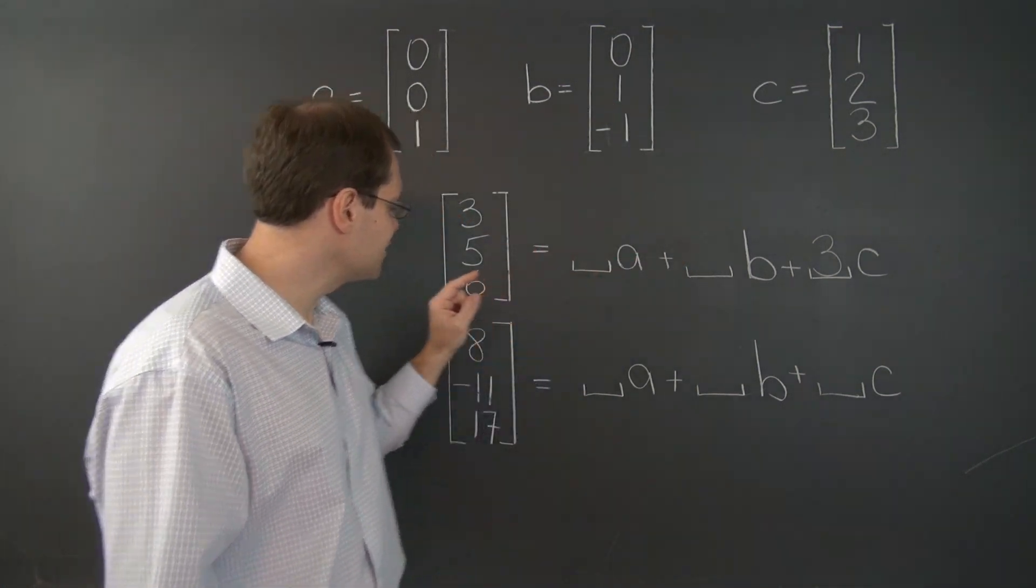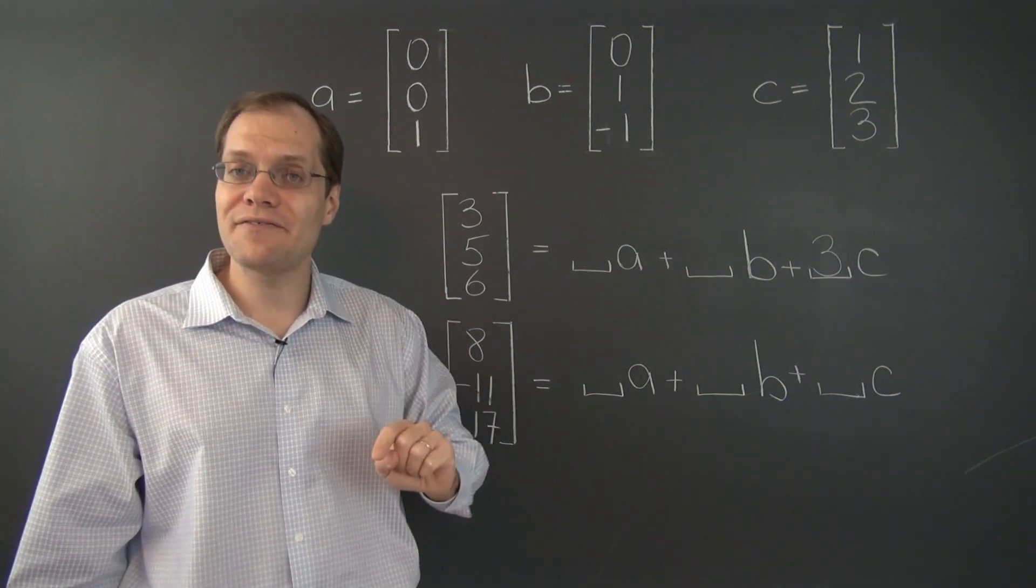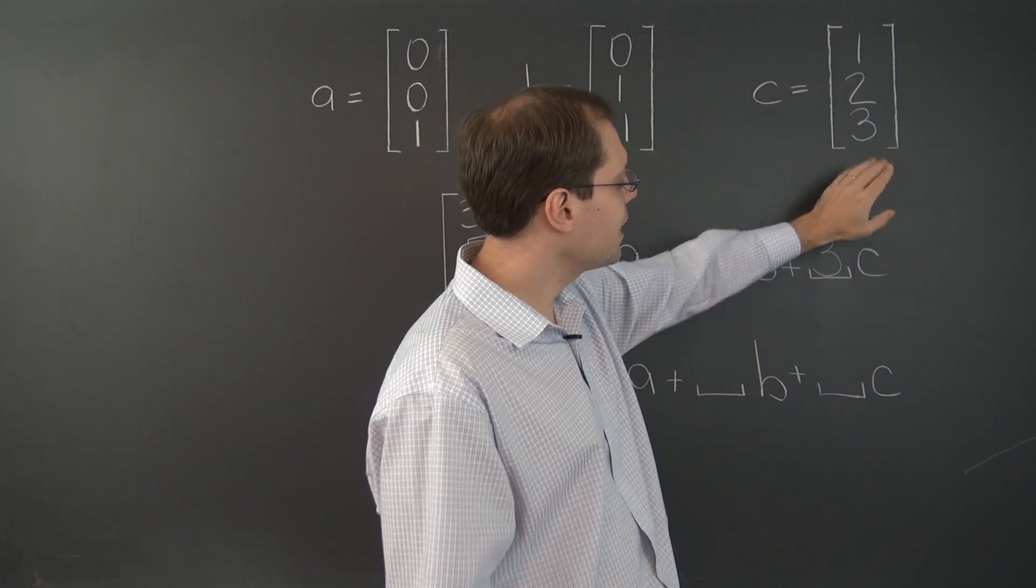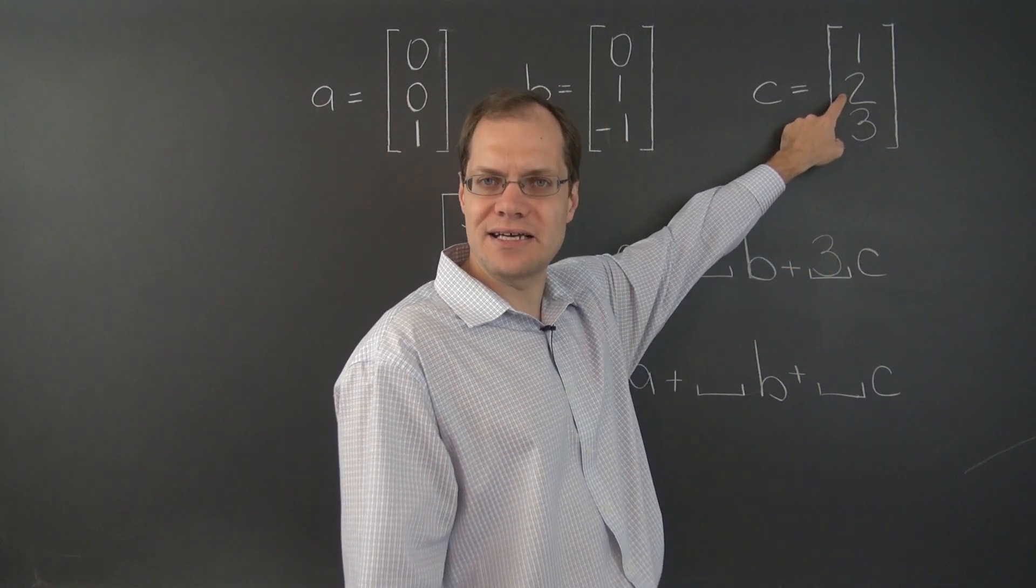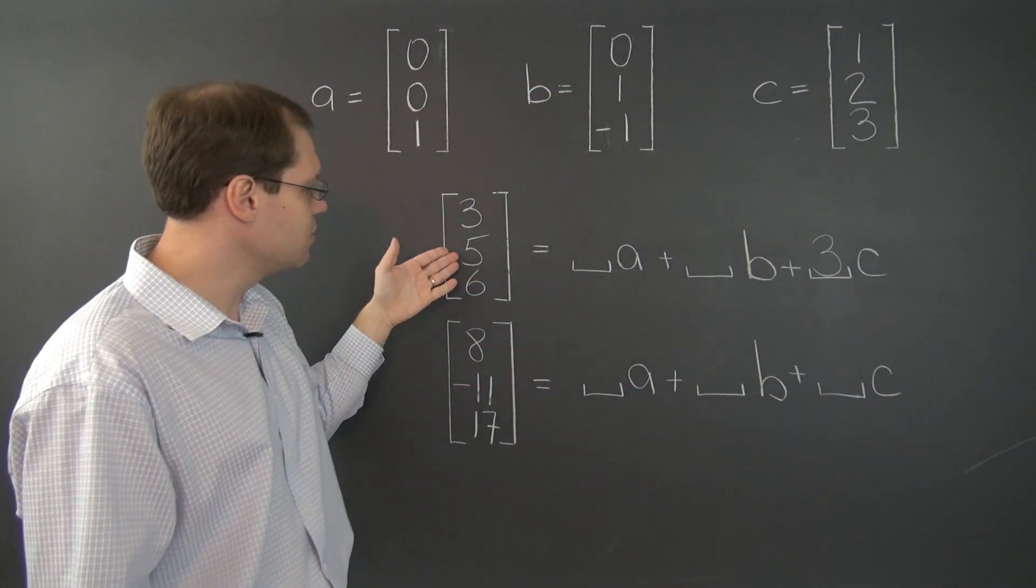But this coefficient is, of course, not five. Because we already have a contribution to the second entry from C. And because we took three of C, that contribution stands at six. And we have to get from six to our ultimate goal, five.